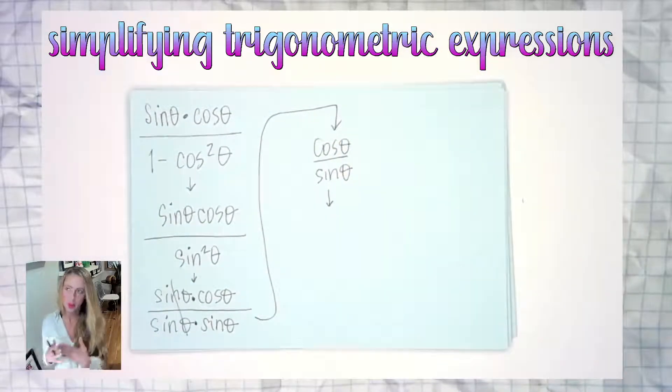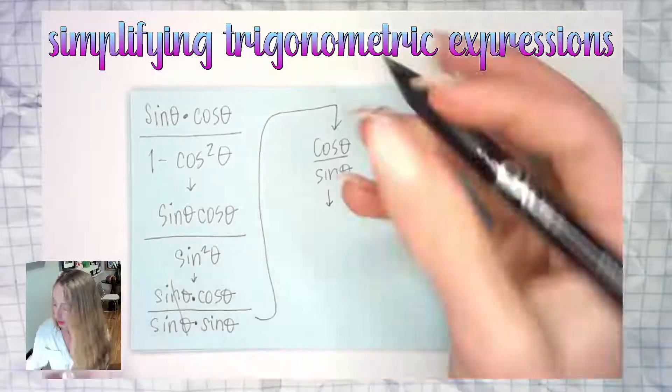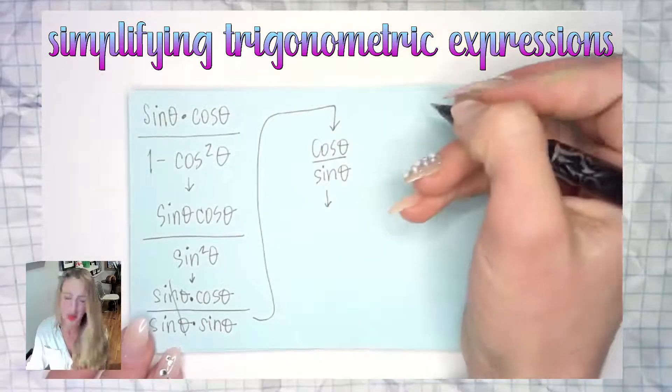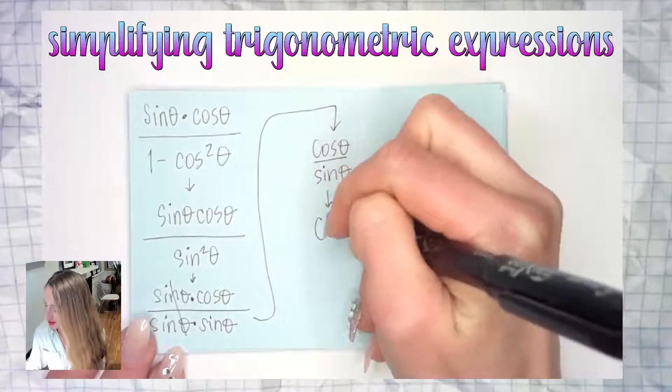Now can I simplify more? This is what you should always be asking yourself when you're doing an example like this one. And we can use our quotient identities. Cosine theta over sine theta. Using our quotient identities, what is that equal to? Good job, cotangent theta.